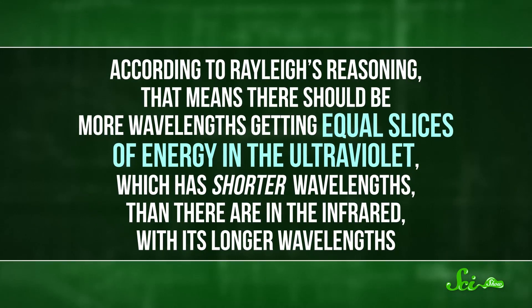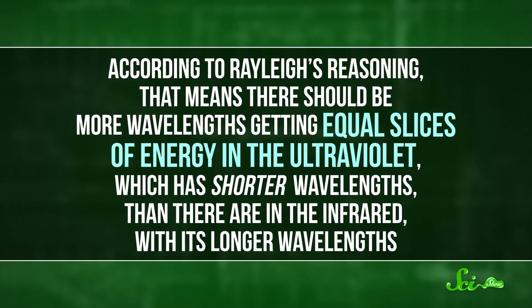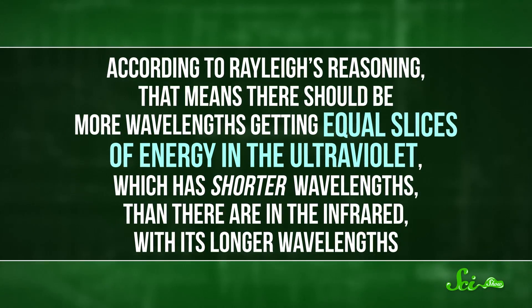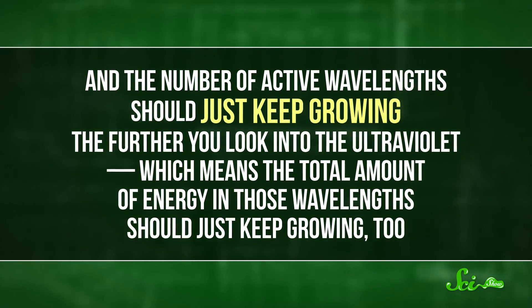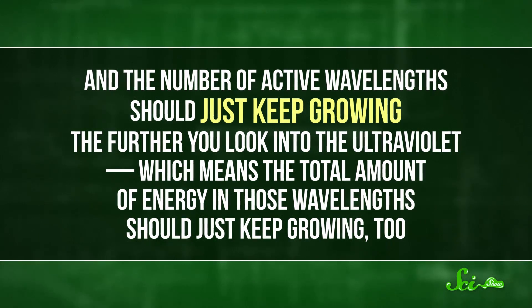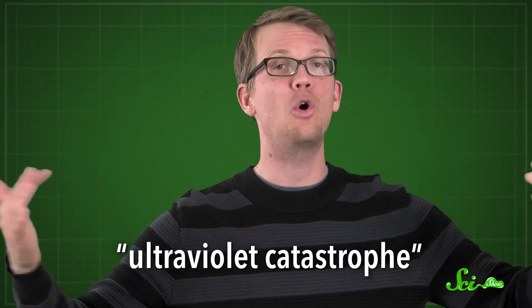But even Rayleigh noticed there was a glaring problem. The shorter the wavelengths you were looking at, the easier it is to find wavelengths that fit perfectly between the oven walls. According to Rayleigh's reasoning, that means there should be more wavelengths getting equal slices of energy in the ultraviolet, which has shorter wavelengths, than there are in the infrared, with its longer wavelengths. And the number of active wavelengths should just keep growing the further you look into the ultraviolet. Which means the total amount of energy in those wavelengths should just keep growing, too. Take that to its logical conclusion, and there should be an infinite amount of ultraviolet light coming out of every object above absolute zero. That is not what the experiments were finding. And it's just, like, also obviously wrong. Like you don't turn on your stove and immediately sizzle into a sunburned crisp from the infinitely large blast of UV radiation you've just experienced.